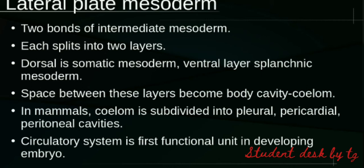The lateral plate mesoderm splits into two layers: a dorsal layer and a ventral layer. The dorsal layer is called the somatic mesoderm, and the ventral layer is called the splanchnic mesoderm.